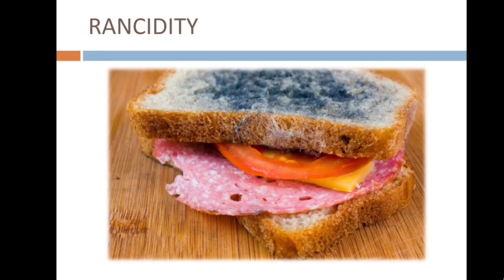Next is rancidity. Rancidity means that sometimes when we keep food for long days it becomes bad — it smells bad and its taste becomes bad. This is caused due to the oxidation of fat and oil present in the food material. In rancidity, the taste and odor of food material containing fat and oil changes when they are left exposed to air for a long time. Rancidity can be prevented by adding antioxidants to the food material, by storing food in an airtight container, or by using packaging flushed with nitrogen gas.